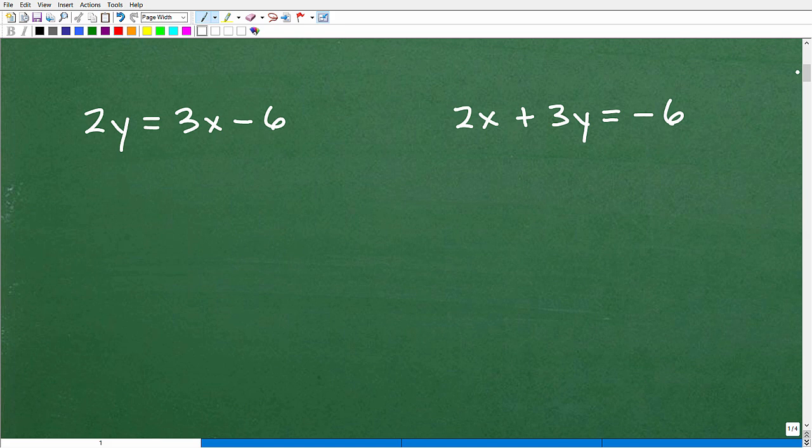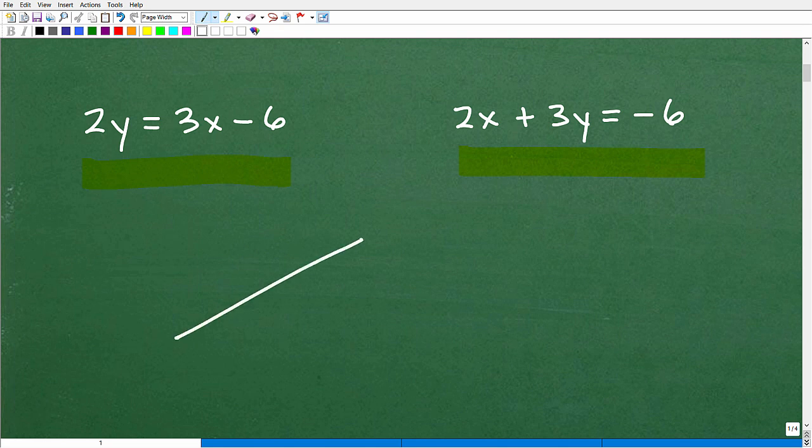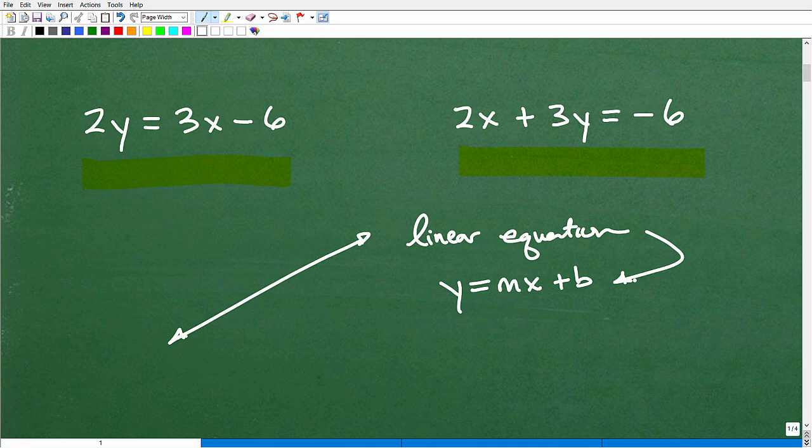And here is our problem. We have one line here, or a linear equation, and we have another linear equation. Now, in algebra, something that we can plot a line on the XY graph, we refer to as a linear equation, or just a line.